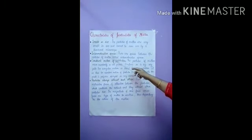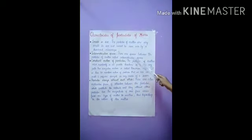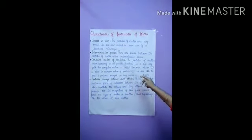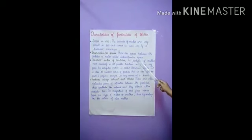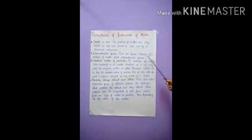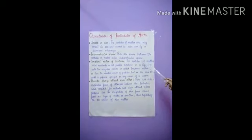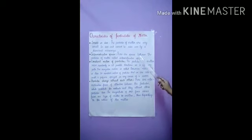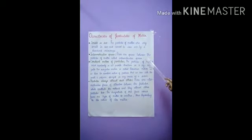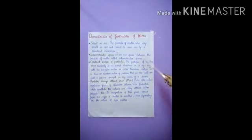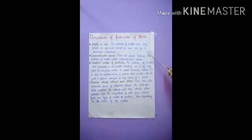The second characteristic is intermolecular space. There are spaces between the particles of matter called intermolecular spaces. It varies from object to object and also from state to state. In case of solids, intermolecular space is negligible. In case of liquids, intermolecular space is more. And in case of gases, intermolecular space is very large.